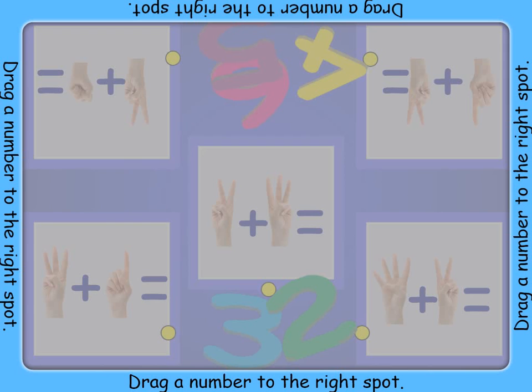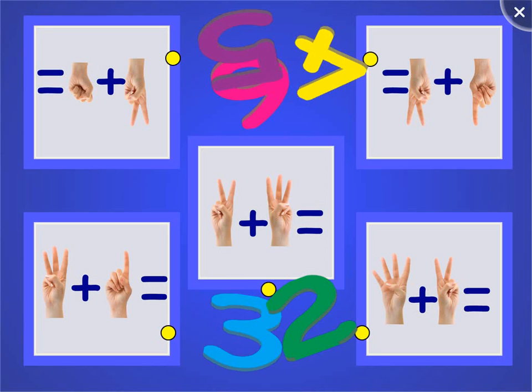Count the fingers on the hands in a box. How many are there in all? Drag the same number to the dot by the box.